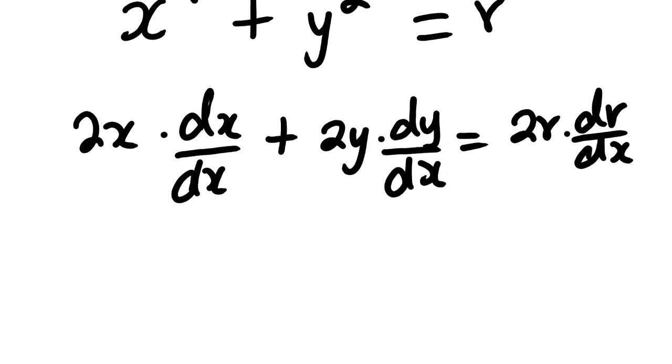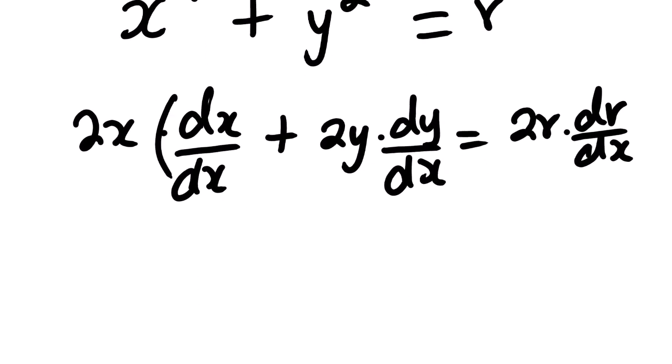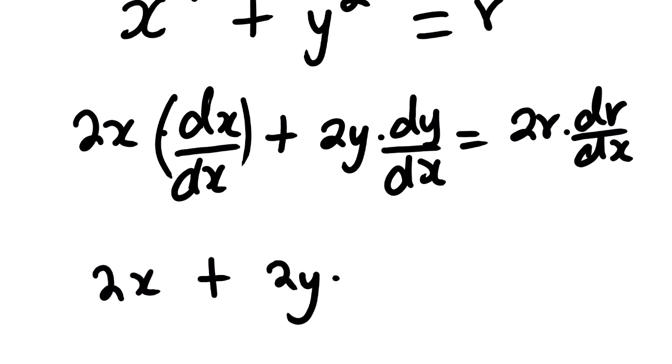Simplifying this, dx over dx equals 1. So we have 2x plus 2y multiplied by dy over dx.